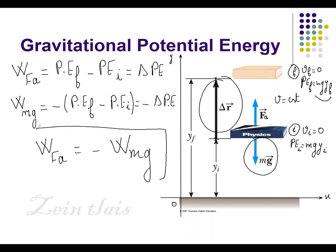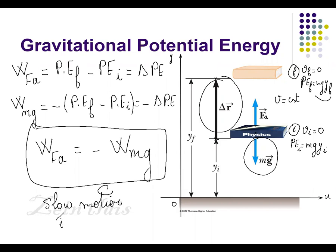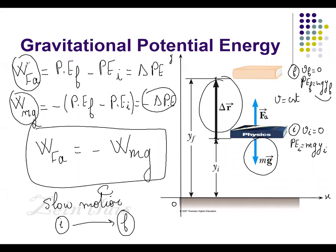This general result holds under the condition that the motion between the initial and final positions is very slow, giving constant velocity — a slow displacement between the two positions. You must know: the work done by mg equals -ΔPE, and the work done by an external agent under slow motion equals ΔPE.